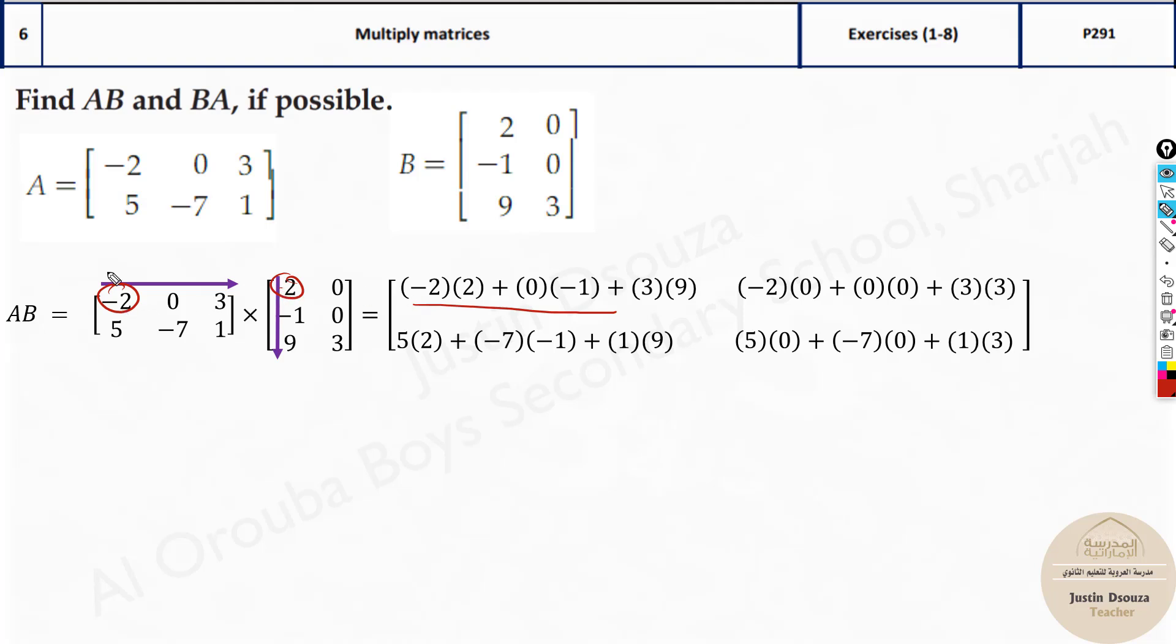Can you see over here that's happened. Minus 2 times 2 here and then 0 times minus 1 and lastly 3 times 9. That is what we do and then you write it over here and then the first row with the second column and that is written over here.